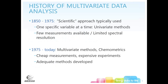Traditionally in the science world, the old approach was very univariate. You held all your variables the same except for one, changed that one variable to see what happened, and then held that one the same and changed a different one. There are a lot of problems with that method. It does give you some information, but it's really limited.